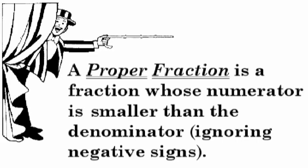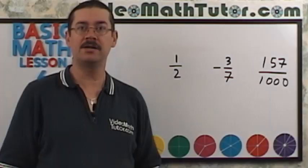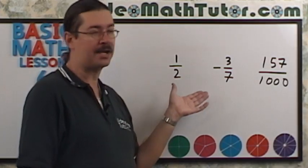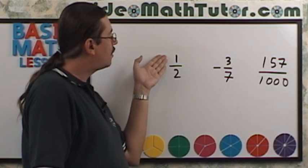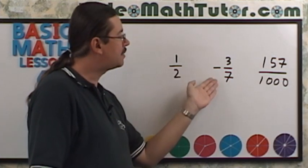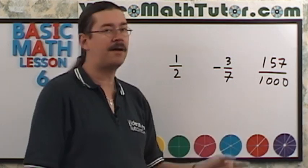A proper fraction is a fraction whose numerator is smaller than the denominator, ignoring negative signs. Here are some examples of proper fractions. Here, 1 is smaller than 2, 3 is smaller than 7, 157 is smaller than 1,000.